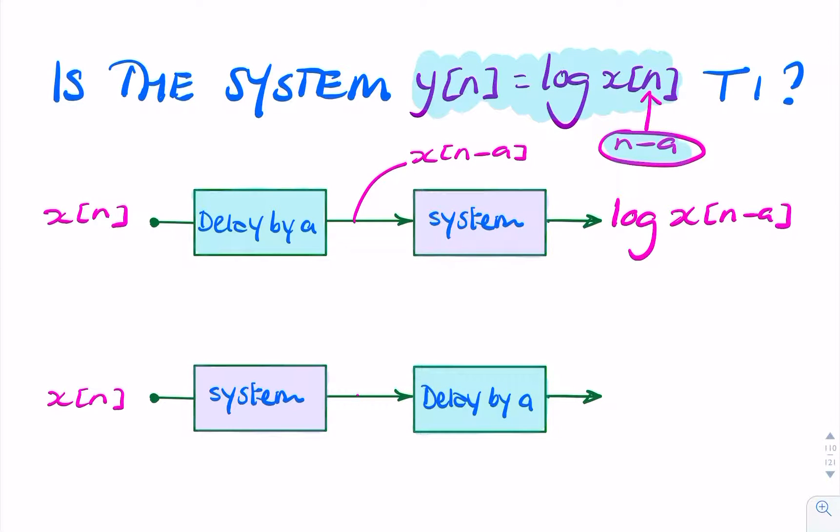And we do the same again, but this time we apply the delay after we apply the signal to the system. So if x of n goes into our system, what comes out should be log x of n. And if we were to delay that, that would give us log x of n minus a.